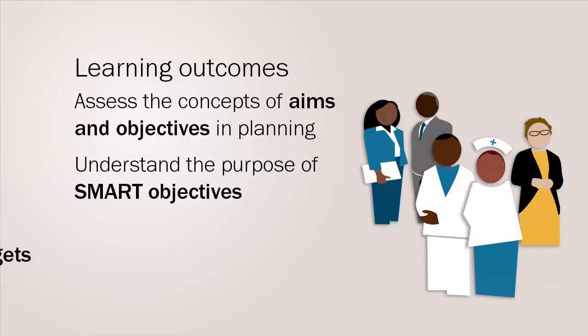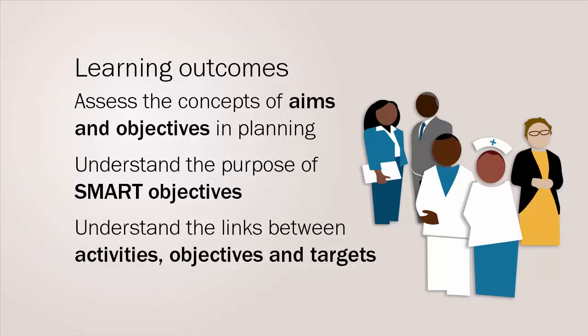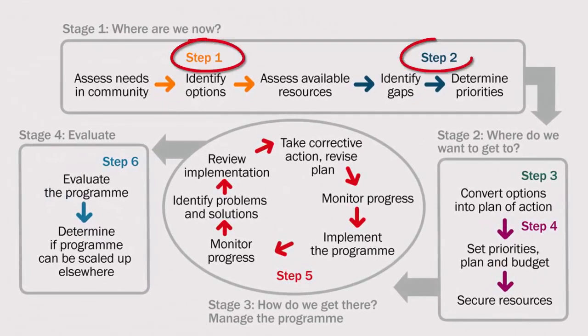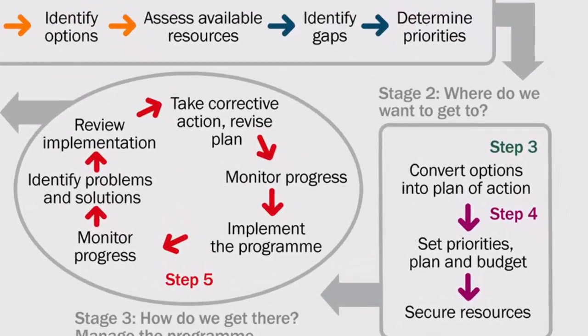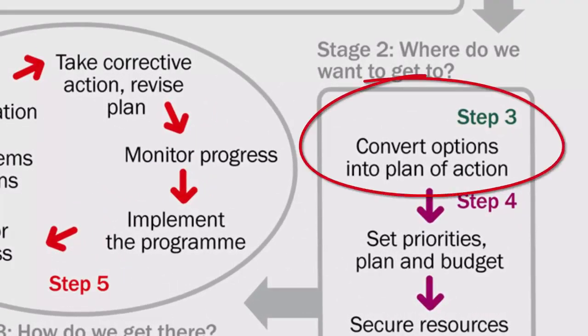You should also be able to understand the links between activities, objectives, and targets. In steps one and two of the planning cycle, planners identify gaps in current service provision using situation and SWOT analyses. In this presentation we look at step three, where planners go on to use this information to convert options into a plan of action to improve eye care services.